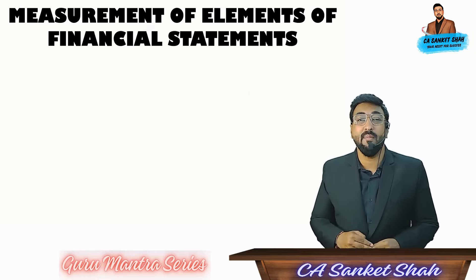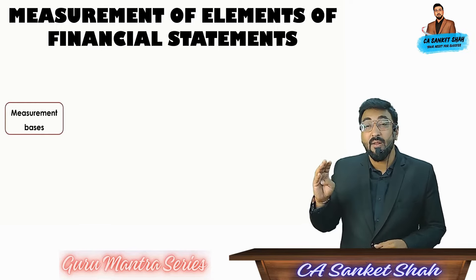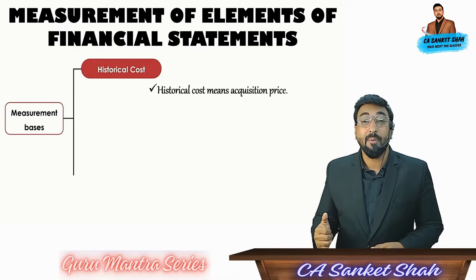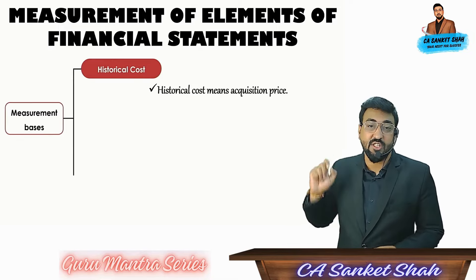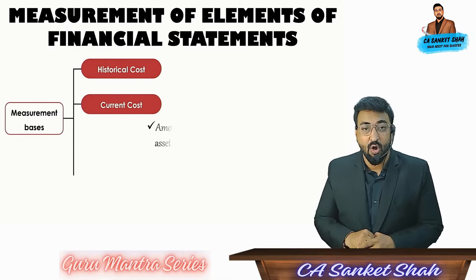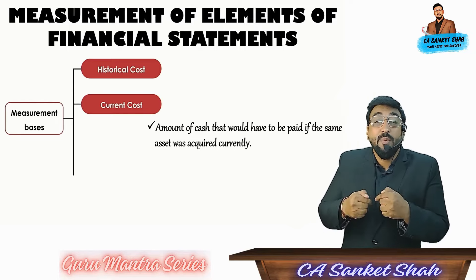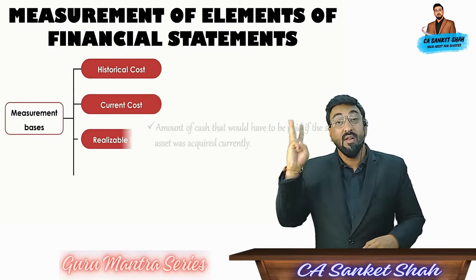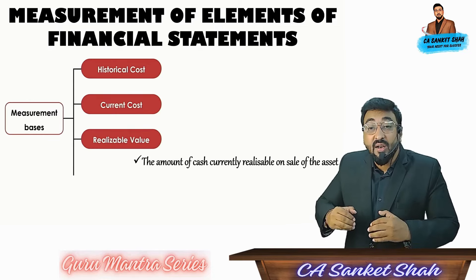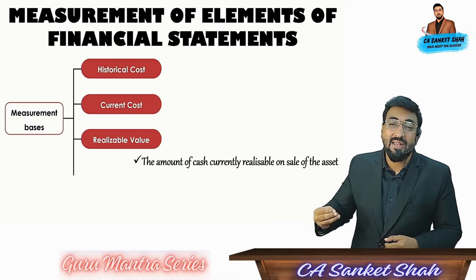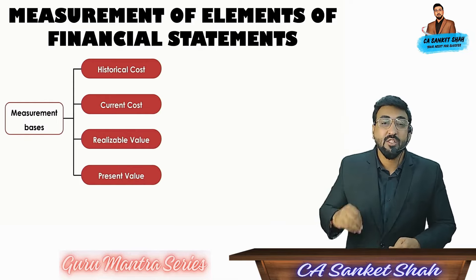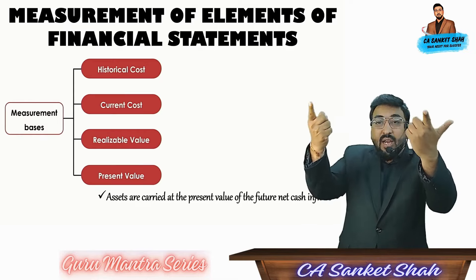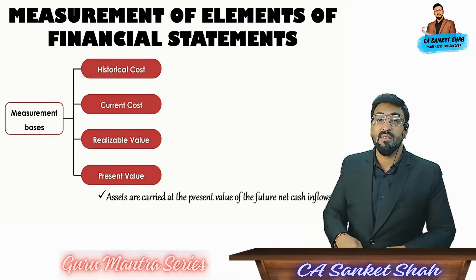Now understand measurement of elements of financial statements. It is divided in four bases. First one: historical cost — the price at which you acquired it, that is acquisition price. Number two: current cost — the amount of cash that would have been paid if the same was acquired currently, so the current acquisition price. Number three: realizable value — the amount of cash currently realized by selling the asset, it is a selling price. And last one is present value — assets are carried at the present value of future cash flows, which is today's value.